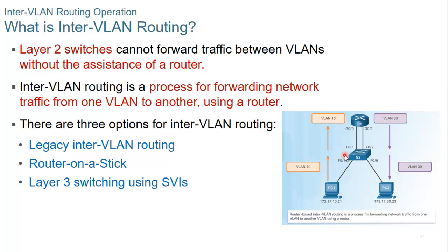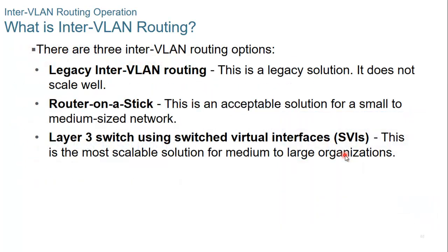There are three options for inter-VLAN routing. There is the legacy inter-VLAN routing, the router on a stick, and layer 3 switching using SVIs. Legacy inter-VLAN routing is a legacy solution — it's old, it doesn't scale well, so it's not really used. Router on a stick is an acceptable solution for a small to medium-sized network, but if there are more than 50 VLANs, it's not going to work. Layer 3 switch using switched virtual interfaces, or SVIs, is the most scalable solution for medium to large organizations.